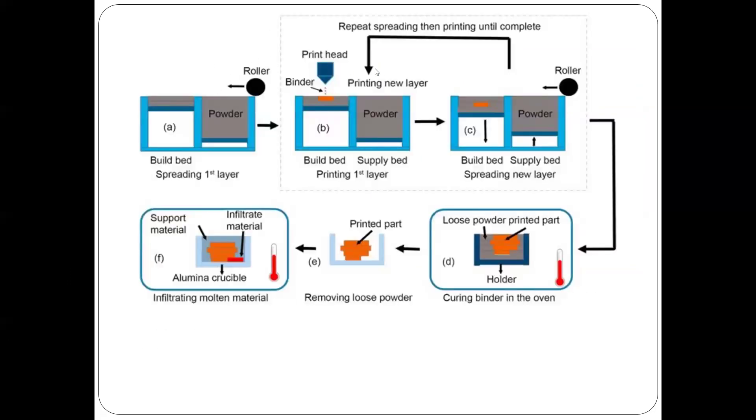There's one more very good illustrative figure showing the steps involved in binder jetting. Here in the first step you can see this is the build area, build bed. The powder is available here, so the roller is going to spread the first layer.